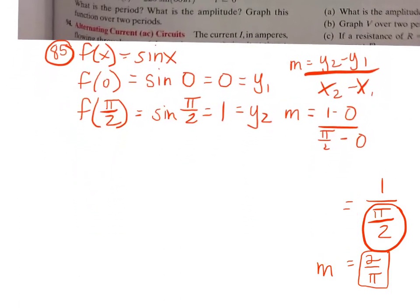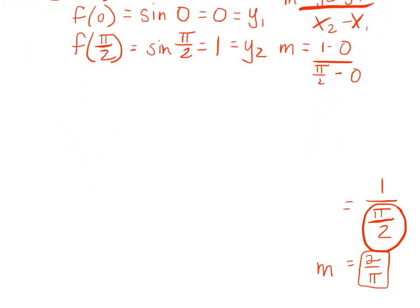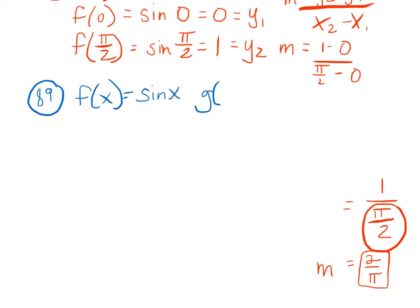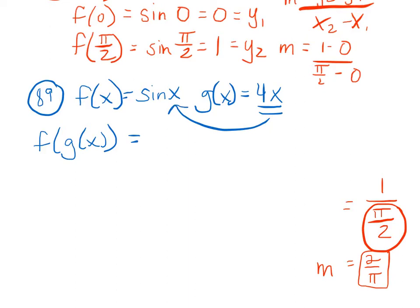Let's do problem 89. They give me two functions: f(x) = sine x and g(x) = 4x. They want f(g(x)) and then they want me to graph it. f(g(x)) means I take the g function and plug it into f, so I get sine(4x). That's the easy part — just plug it in.